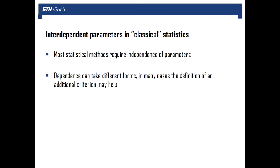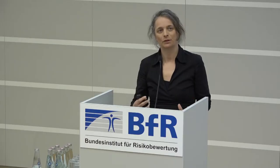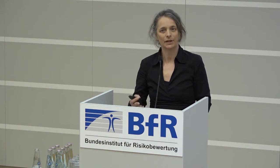Most statistical methods, at least the classical frequentist ones, require independence of parameters. So whenever we have a dependency between parameters, we have to think of an additional criterion for how to deal with this. Dependencies can take different forms, and the criterion depends on what kind of dependence I find. In the first part of my talk, I want to give you an overview of the methods we are using.